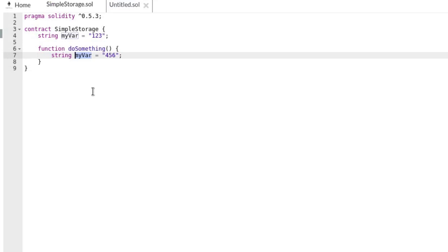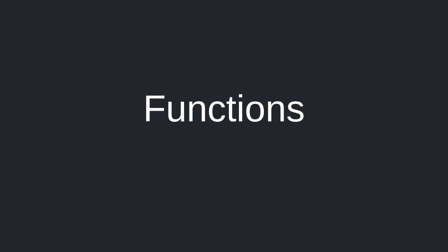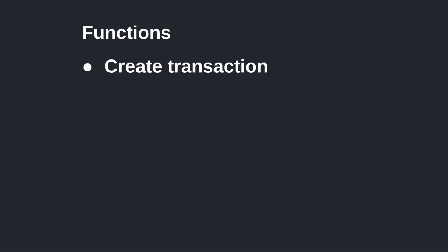Variables declared inside a function are only available during the function call and won't be stored onto the blockchain. Functions in Solidity can be categorized into two types: functions that create transactions on the blockchain and functions that don't. Functions that create transactions write data on the blockchain, like changing the value of a state variable or sending ether to another account. Functions that don't create any transaction are free to call and do not change the state of the blockchain.